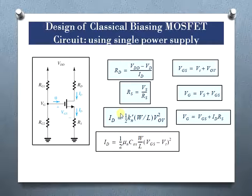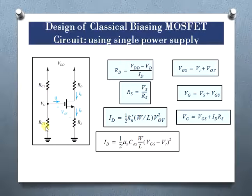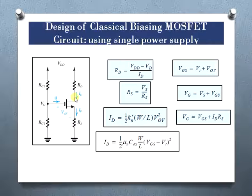Coming to the first design — the classical bias MOSFET circuit which makes use of a single power supply. The circuit uses a voltage divider network where resistances RG1 and RG2 form the voltage divider. The gate current is zero and the single power supply is represented as VDD. The drain resistance RD is computed as (VDD minus VD) / ID, and the source resistance RS is computed as VS / RS. The gate-to-source voltage equals threshold voltage plus overdrive voltage.